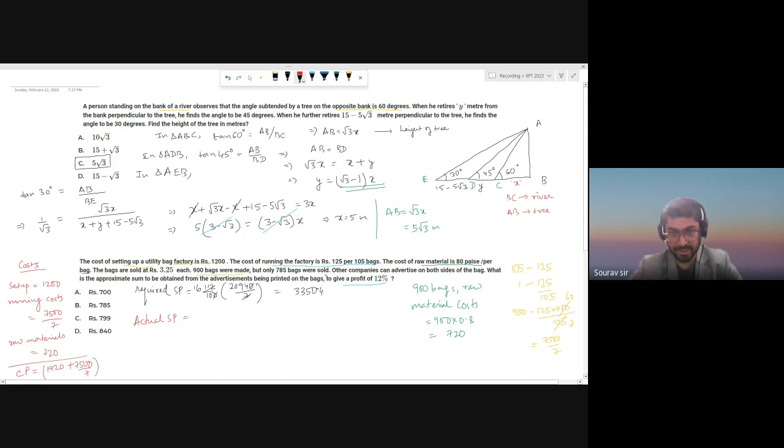Only 785 bags were sold. That means 785 and the rate is also given, 3.25. To do that multiplication, you will end up with 2551.25. Now, what is the approximate sum to obtain from advertisements being printed on the bags? So they don't actually ask advertising on each side's cost. They just want to know the total amount of advertisement money required. So this information, both sides of the bag, this information is extra information.